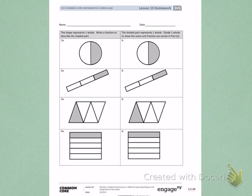First, I'm going to work with column A. The shape represents one hole, so that tells me that the entire shape I see in each picture in letter A is going to be one hole. Write a fraction to describe the shaded part. On letter 1A, I see the entire circle is one hole, and it has been divided into two equal parts. One of those two equal parts is shaded, so the fraction is 1 half.